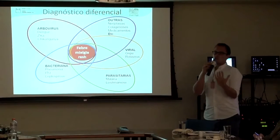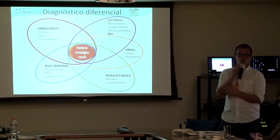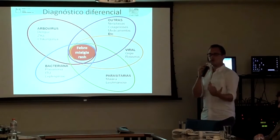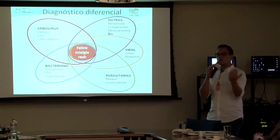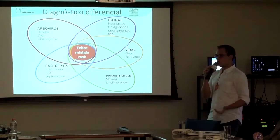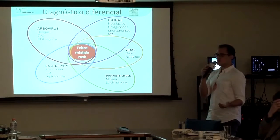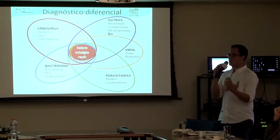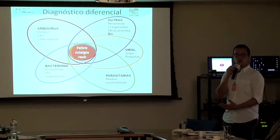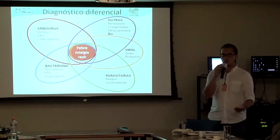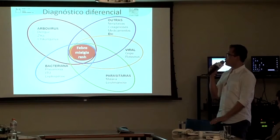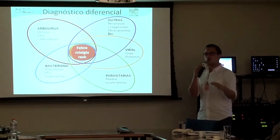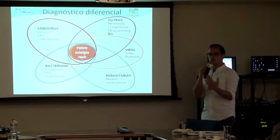Do ponto de vista do profissional de saúde atendendo um paciente suspeito de febre amarela: o que a gente considera um caso suspeito? Alguém com febre entre 7 e 10 dias, proveniente de uma área onde ocorra transmissão de febre amarela e que não tenha sido vacinado. A gente vai ter várias gradações de suspeição. Se não estamos numa época de epidemia, investiga-se mais a história epidemiológica; durante a epidemia, esse grau de suspeição aumenta. Podemos ter desde infecção assintomática, síndrome febril inespecífica, até o quadro clássico com sangramento.